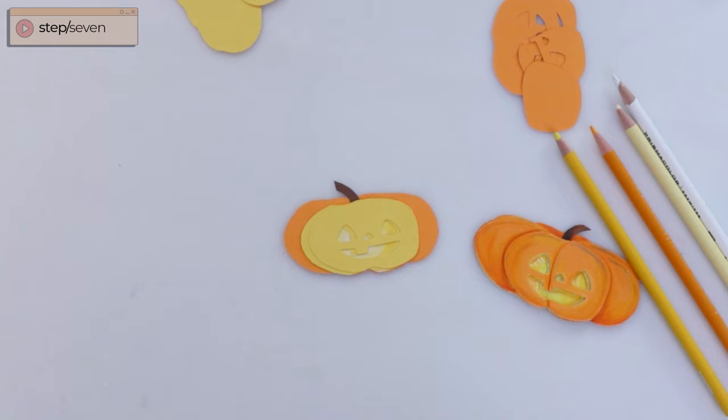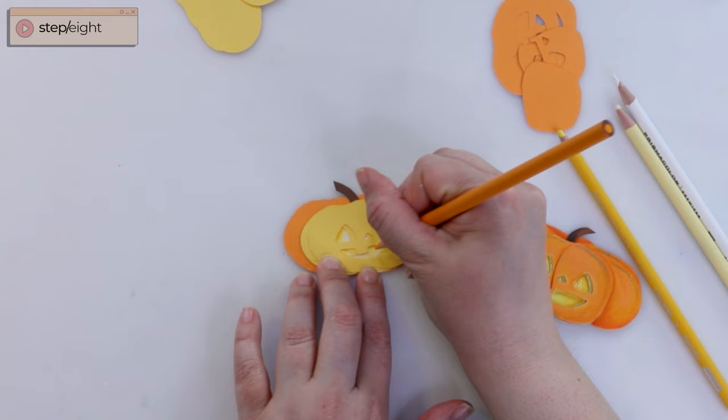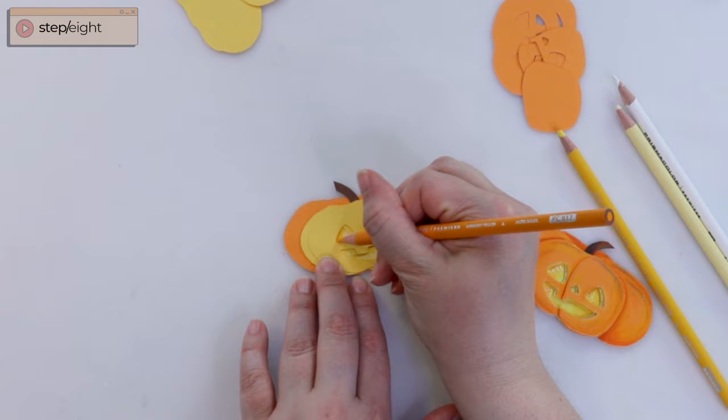And now we're getting to the fun part. We're going to start adding color to our jack-o'-lantern. So we're going to start with our first layer of shading. With your orange pencil, go ahead and add a slight shadow to the left corners of your eyes, nose, and mouth. Then blend this color with the yellow and finally the white.